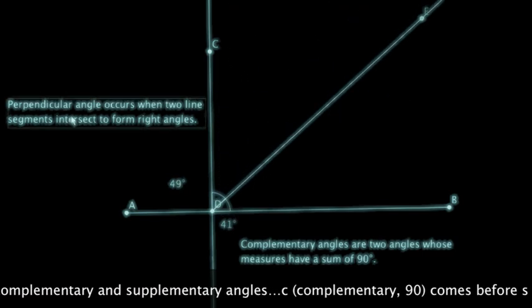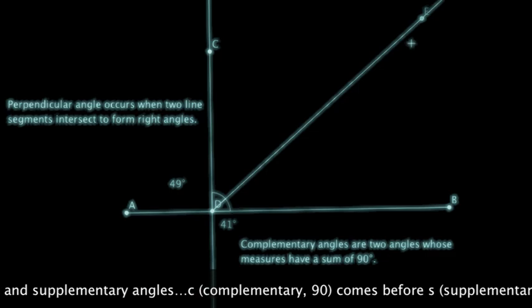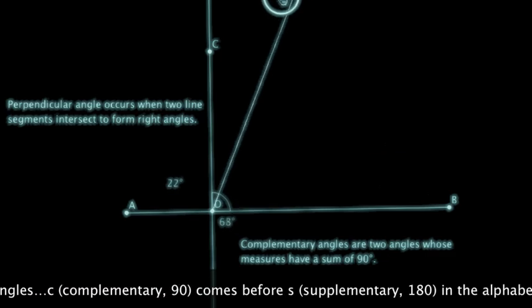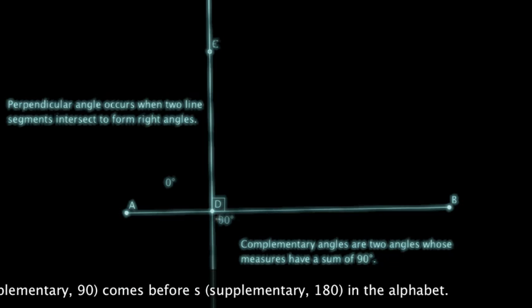And a perpendicular angle occurs when two line segments intersect to form right angles. And that's just going to be that right angle box there.